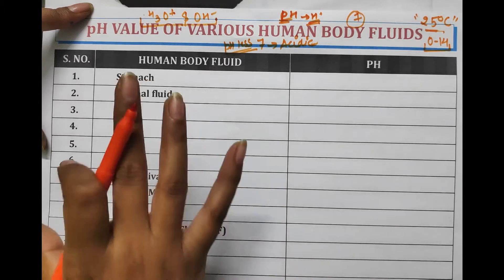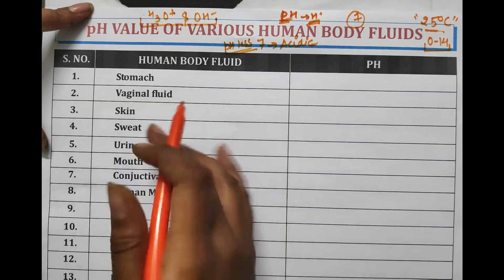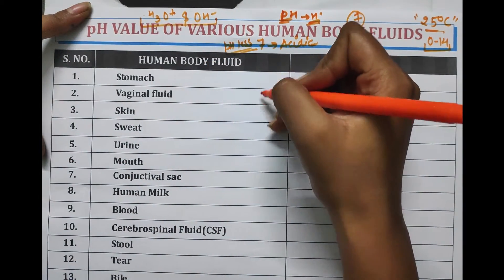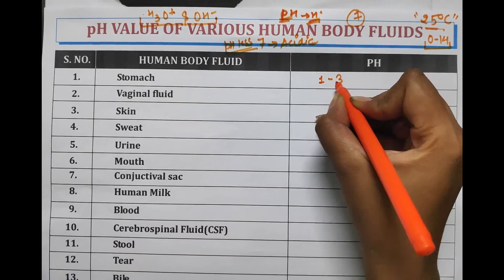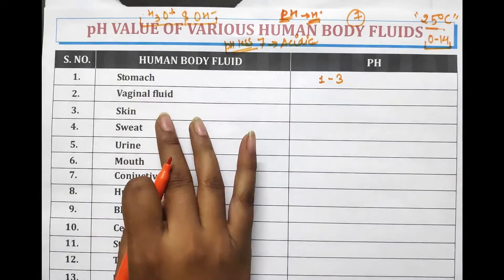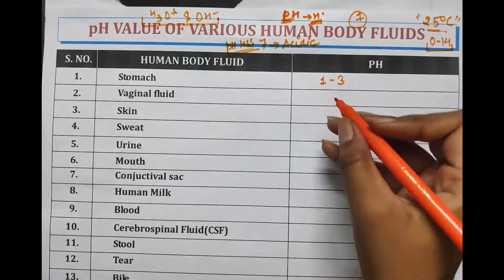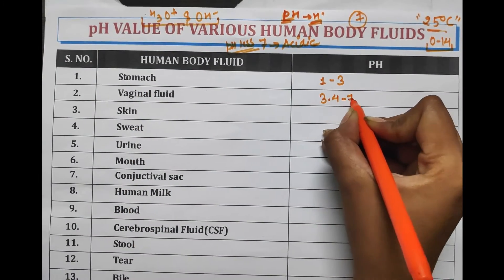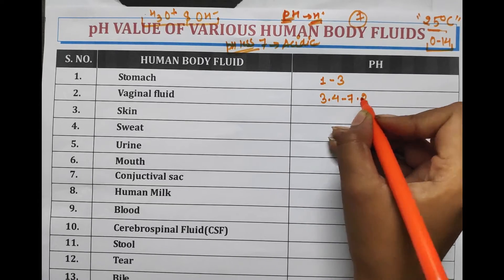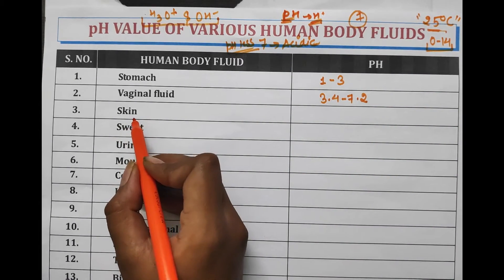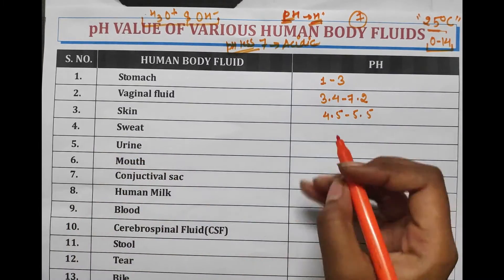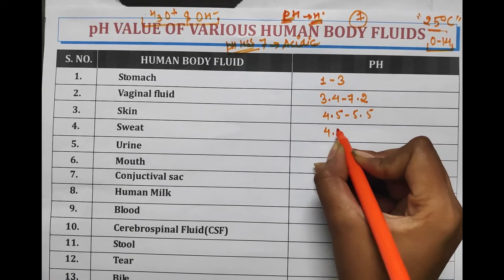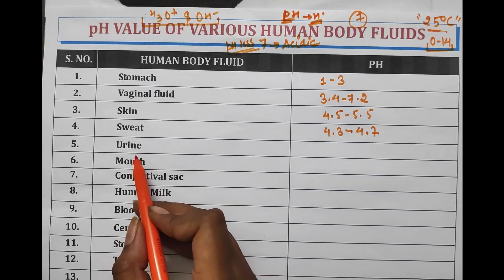Let's move on to human body fluid pH values. We will discuss from acidic substances or organs to basic. Stomach is considered the most acidic organ of our body, with a pH ranging from 1 to 3. Vaginal fluid has a pH of 3.4 to 7.2 — it has a wide range. Skin has a pH of 4.5 to 5.5. Sweat has a pH range from 4.3 to 4.7.